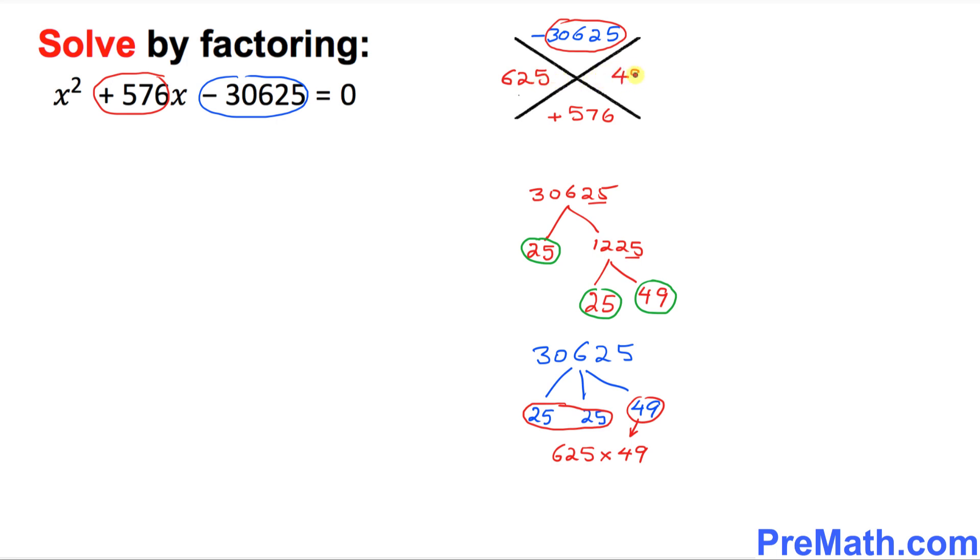Now the next step is we need to fix the signs. Since this is a positive 576, that means this is going to become positive 625 and negative 49. So these are our two factors: positive 625, negative 49. If you multiply them, you're going to get this number negative 30625, and if you add them, you're going to get positive 576.